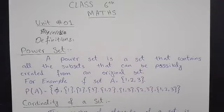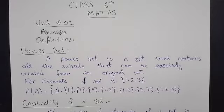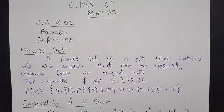The first definition is Power Set. Power Set is a set that contains all the subsets that can be possibly created from an original set. Power Set is a set that contains all subsets.